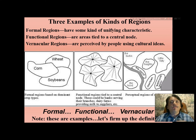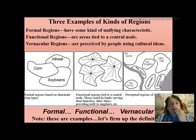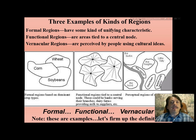The third type is called a vernacular region. Vernacular regions are perceived in people's minds as having some kind of unifying characteristic — but it's in the mind. In the example shown here, a hypothetical city built along the shore of an ocean with a river has neighborhoods thought of as having characteristics distinct from one another: a downtown, a warehouse district, the arts district, Little Italy, the suburbs, and so on.